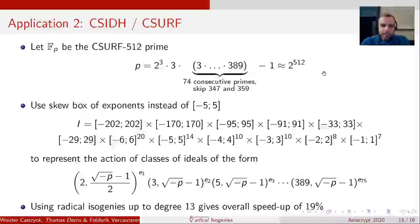As for the second application, let's take a look at CSIDH. We'll be using the CSURF-512 prime, which is based on CSIDH with a simply slightly different setting where we can also use the 2 isogenies. But the same as before, we have 74 odd primes, but we'll also be using the prime 2 in this case.